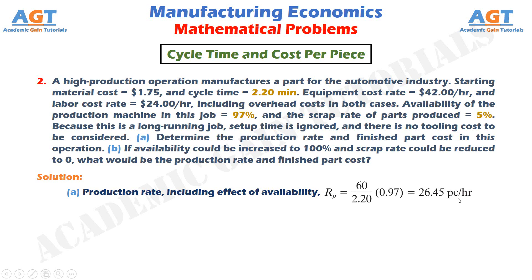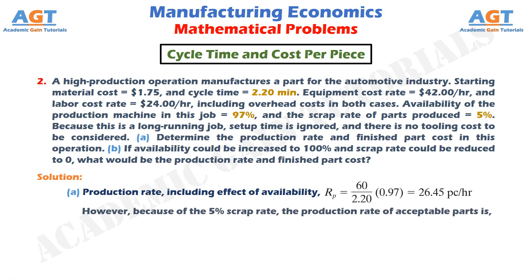However, because of the 5% scrap rate, the production rate of acceptable parts is: Rp equals 26.45 pieces per hour multiplied by (1 minus scrap rate of 0.05). Thus, because of the 5% scrap rate, the production rate of acceptable parts is 25.13 pieces per hour.